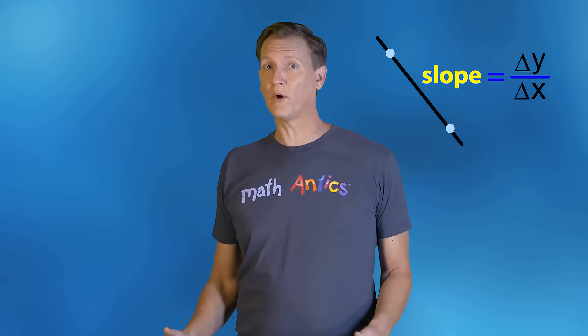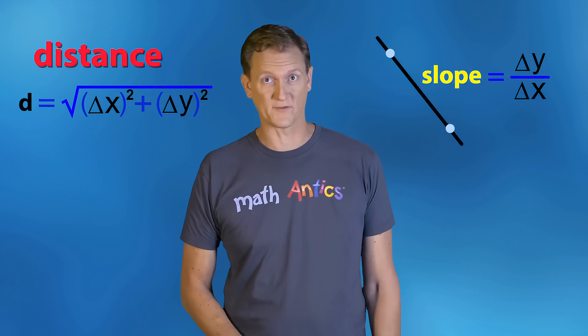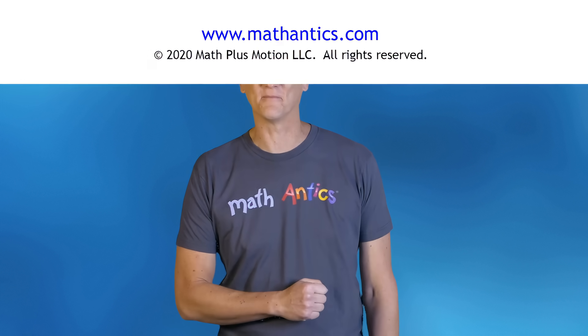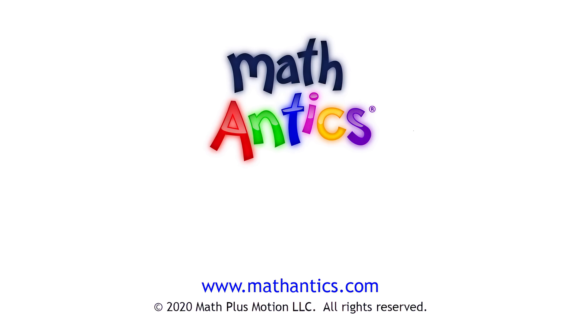Alright, so now you know how to calculate the slope of a line if you know any two points along that line. You also know how to calculate the distance between any two points on a line using the so-called distance formula. Also known as the Pythagorean Theorem, invented by me, Pythagoras. Ah yes, thank you for reminding us, Pythagoras. Remember, the key to success in math is to practice, so be sure to try some slope and distance problems on your own. As always, thanks for watching Math Antics and I'll see you next time. Learn more at MathAntics.com